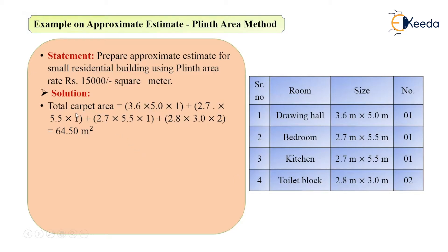What we have to do first is calculate the areas of these rooms — area is nothing but length into width. For example, the area of the drawing hall will be 3.6 meter by 5 meter, and the area of the bedroom will be 2.7 into 5.5 meter. I will calculate the total carpet area: 3.6 into 5 into 1 — that is the carpet area of the drawing hall. The number 1 is taken because the number of drawing halls is 1.